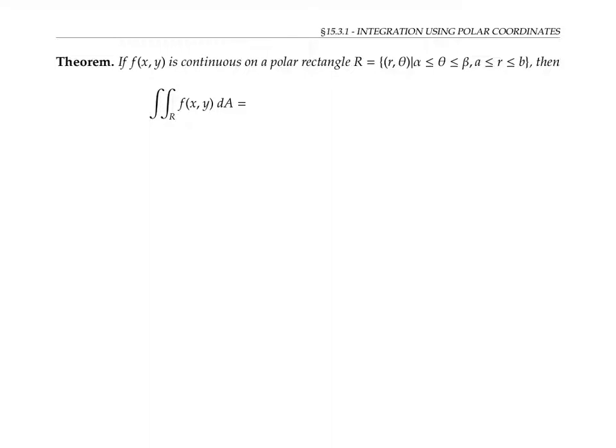The method used in the previous problem works more generally. If f is any continuous function on a polar rectangle, by that I mean a region that's a collection of points with coordinates r and theta, where theta is between two constants, and r is between two constants, then we can evaluate the integral of the function in polar coordinates by converting x in terms of r and theta,